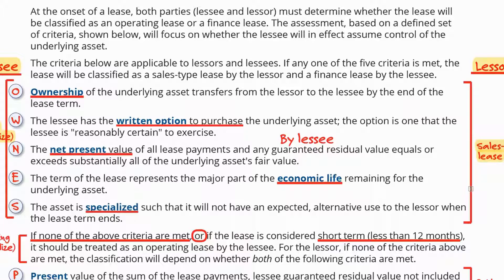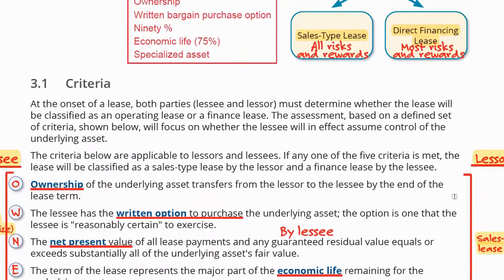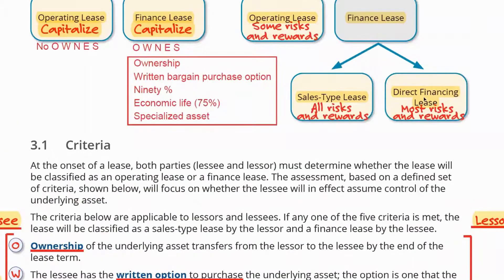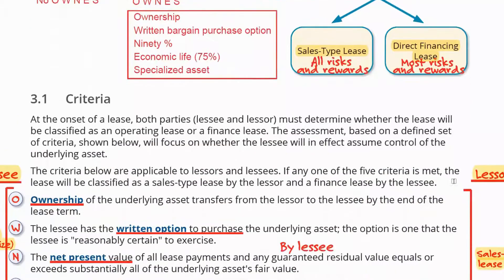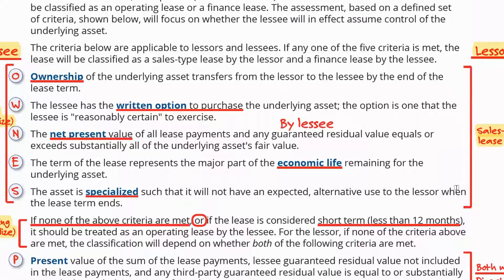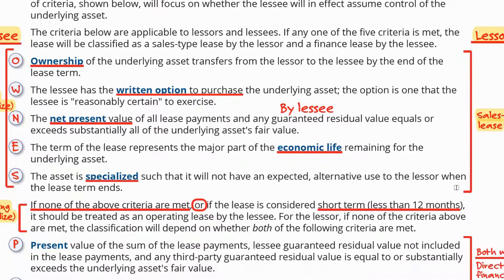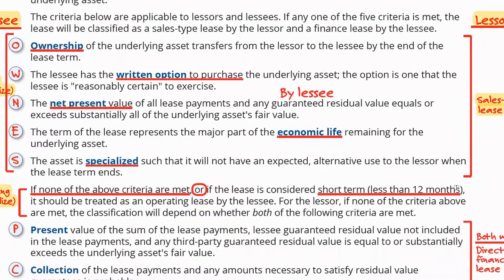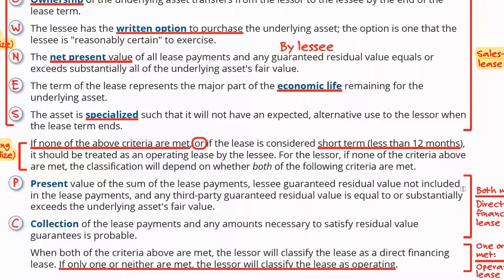Having said that, ladies and gentlemen, we're done with the first part — the identification of the lease and the lease classification. What about the next part? That would be the initial recognition and then the subsequent measurement of leases.